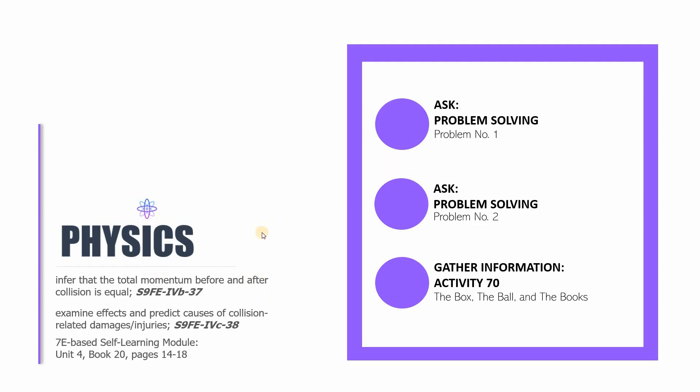Hello and welcome to the 17th session of Physics 9. This is divided again into the usual three parts. In this case, the ask component is about to end with these problem-solving discussions and activities for problem number one and problem number two. And then for the last part of this session, we have gather information for activity number 70, the box, the ball, and the books.